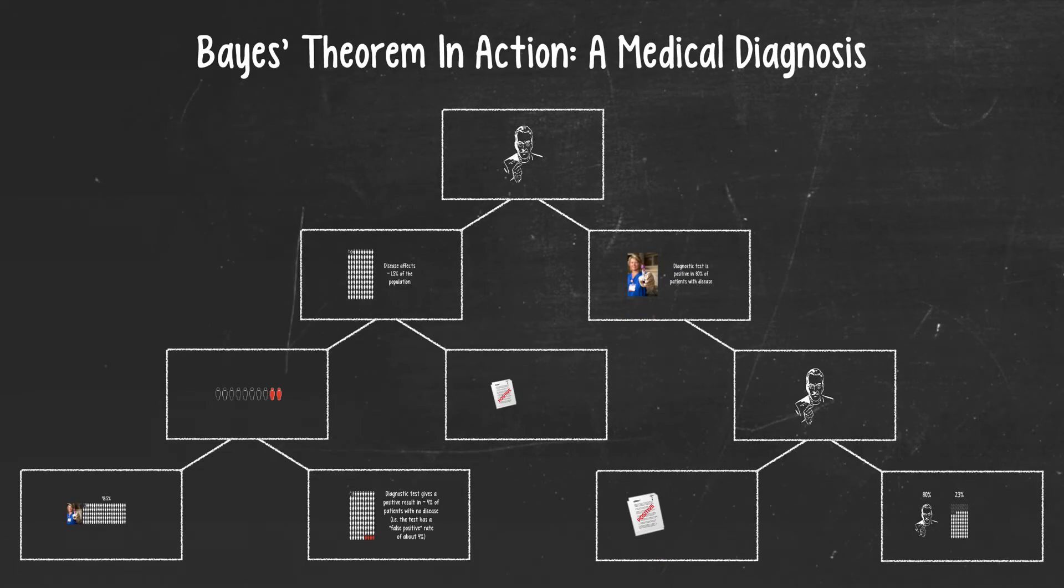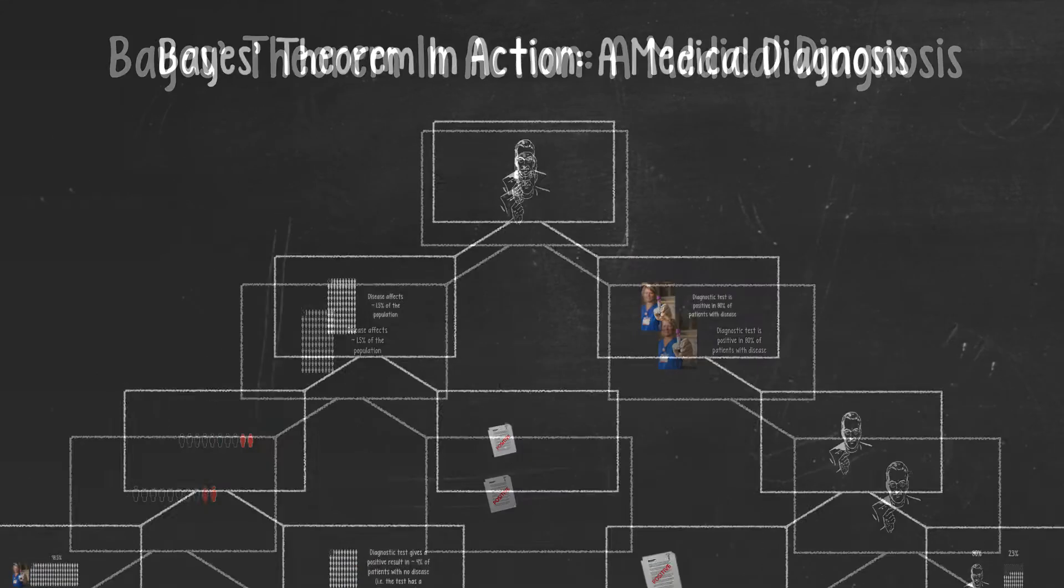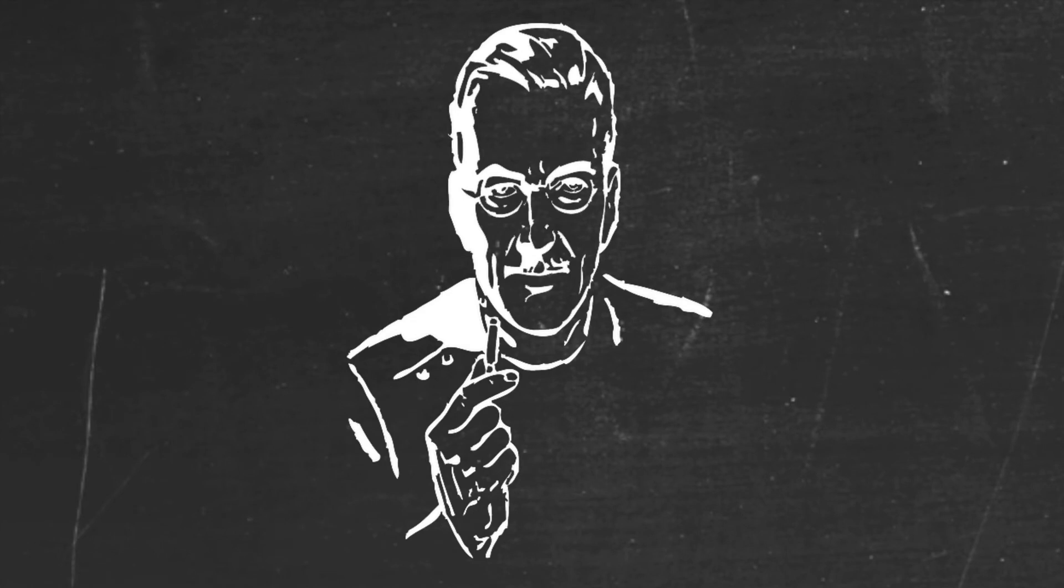If you tried to describe an automobile to someone who's never seen one, the best way would probably be to show them what it does. And similarly, the best way to understand Bayes' theorem is to see it in action. So let's look at an example that affects us all, getting tested for something at your doctor's office.